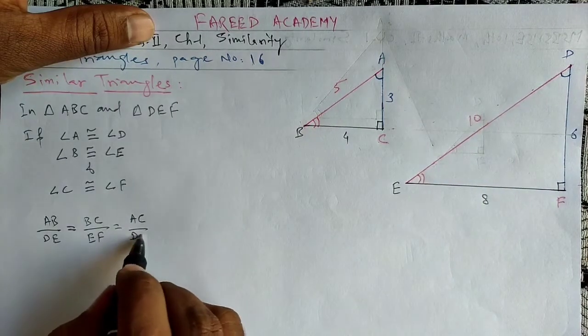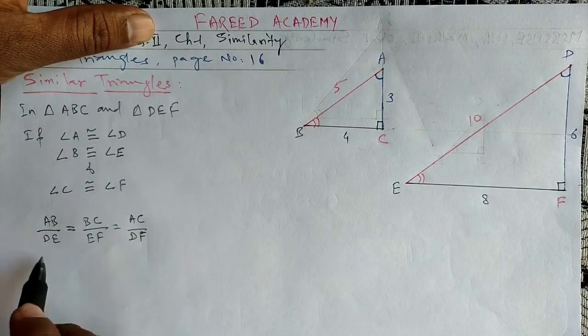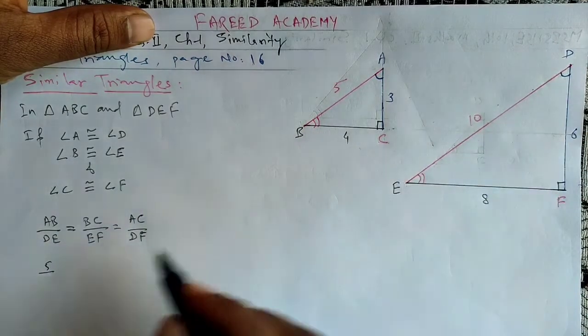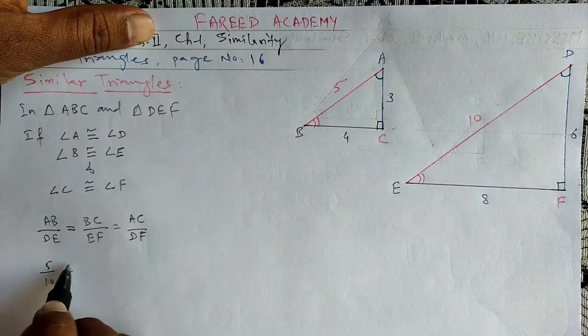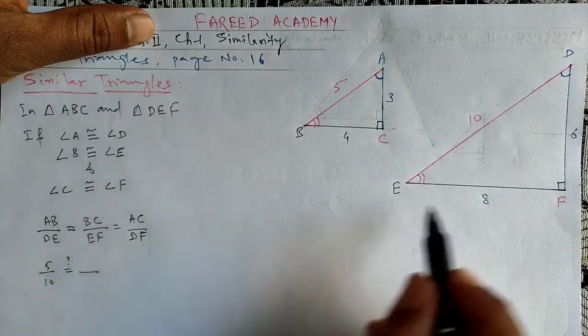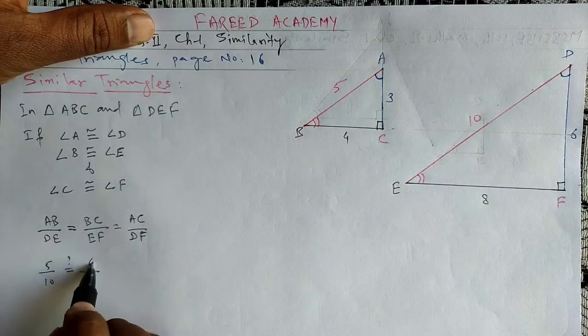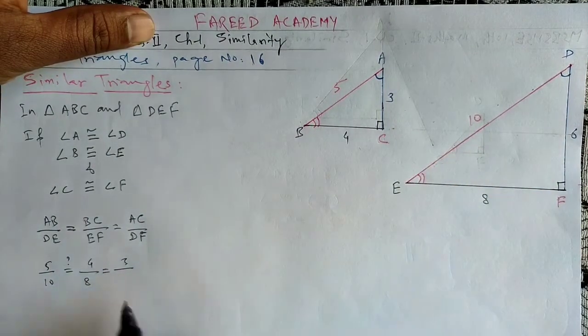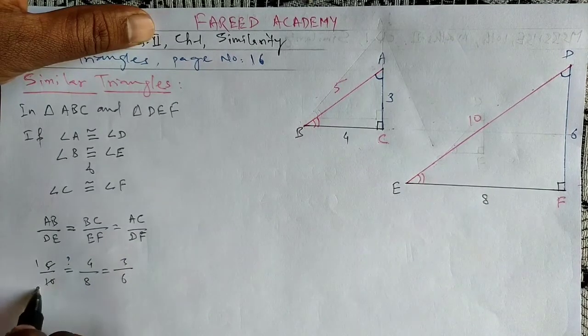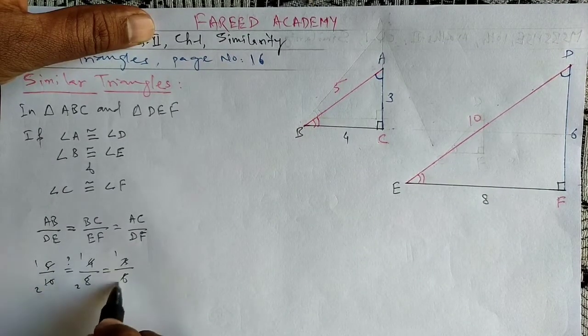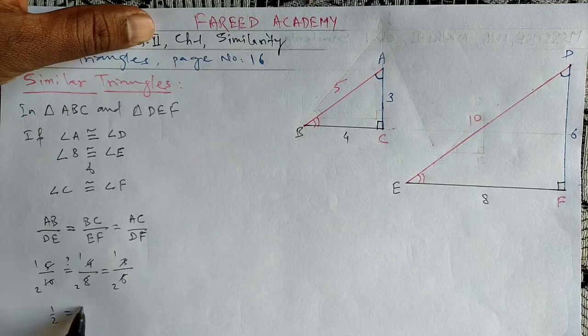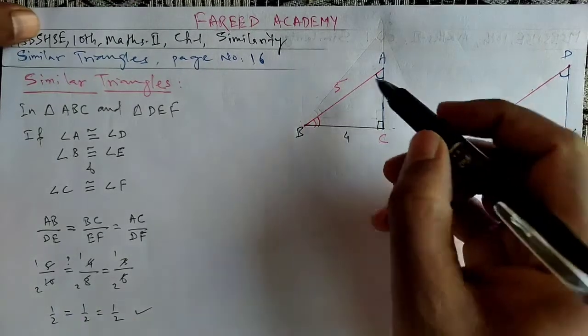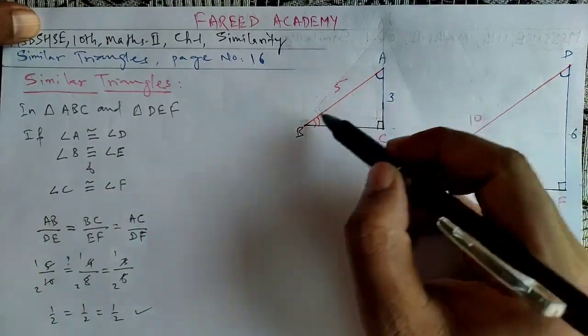So we have values: AB is 5 and DE is 10. We will check if it equals BC which is 4 and EF which is 8, and AC which is 3 and DF which is 6. So 5 over 10 is 1/2, 4 over 8 is 1/2, and 3 over 6 is 1/2.